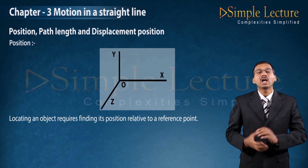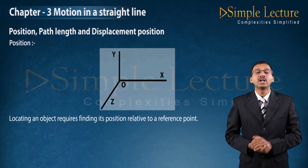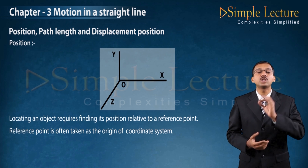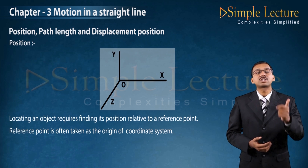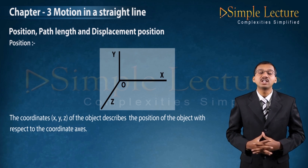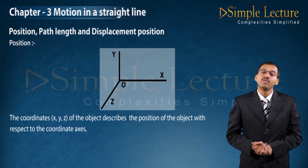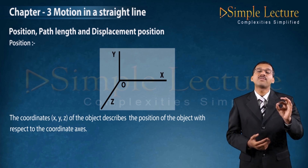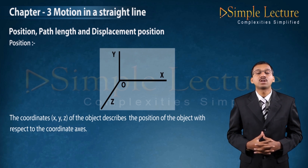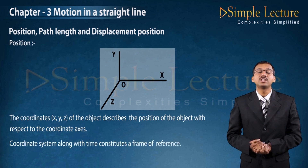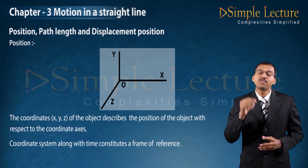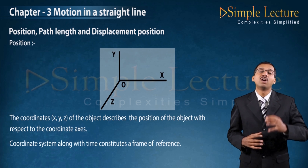Therefore, locating an object requires finding its position relative to the reference point. That reference point is often taken as the origin of the coordinate system — that is x, y, and z. The coordinates x, y, z of the object describe the position of the object with respect to the coordinate axes. With respect to the reference point only we can determine the position of the object; if there is no reference point, we cannot determine it. The coordinate system along with respect to time constitutes a frame of reference.